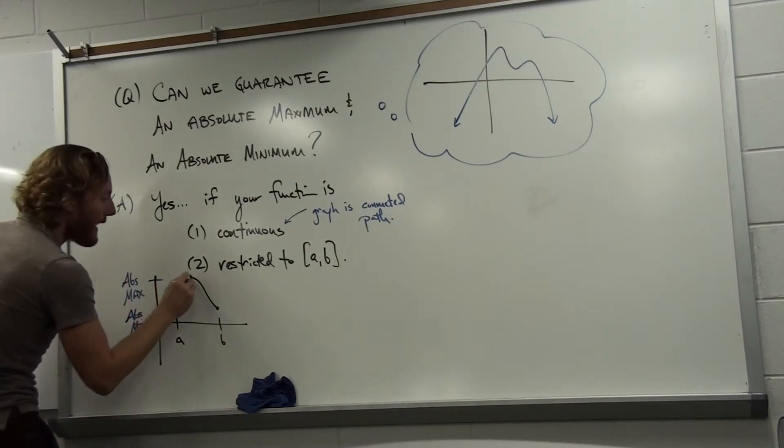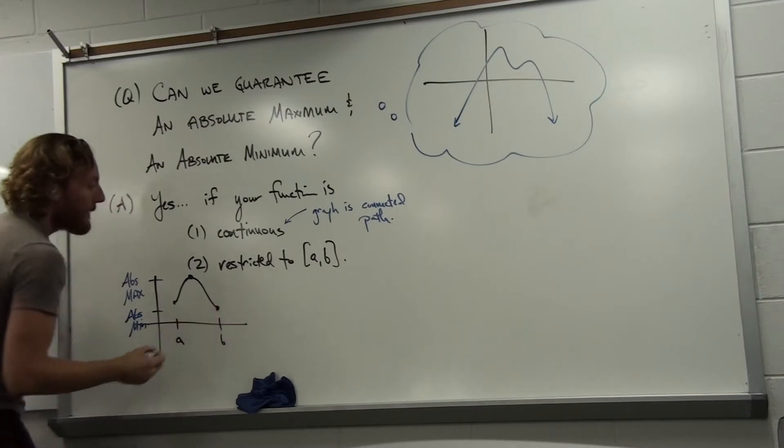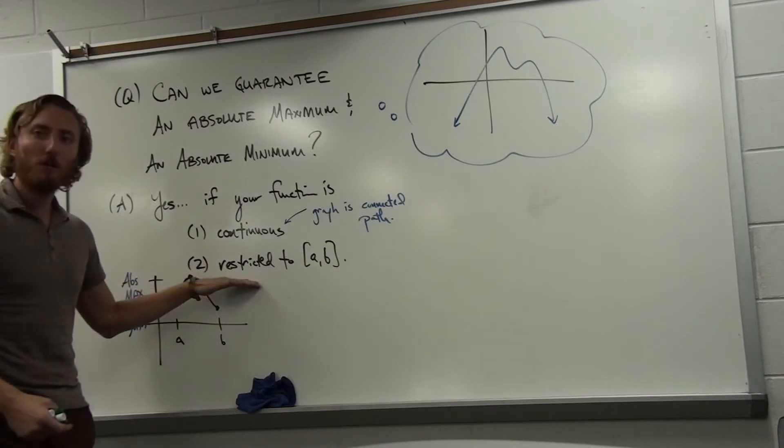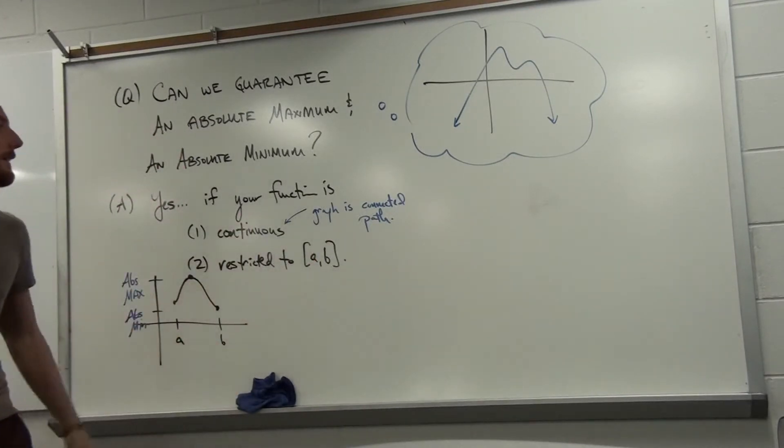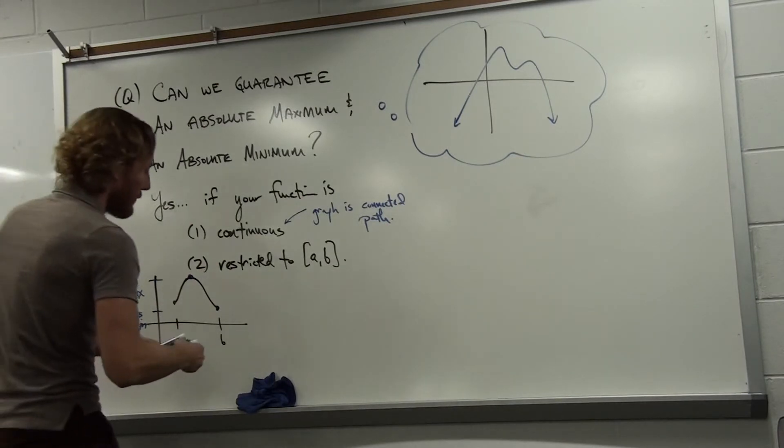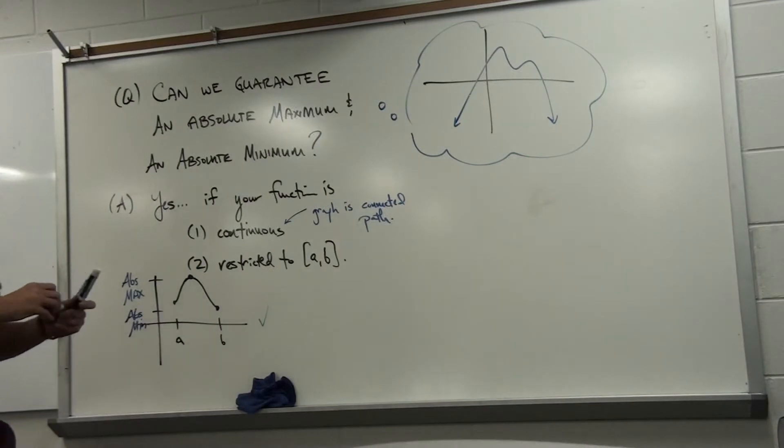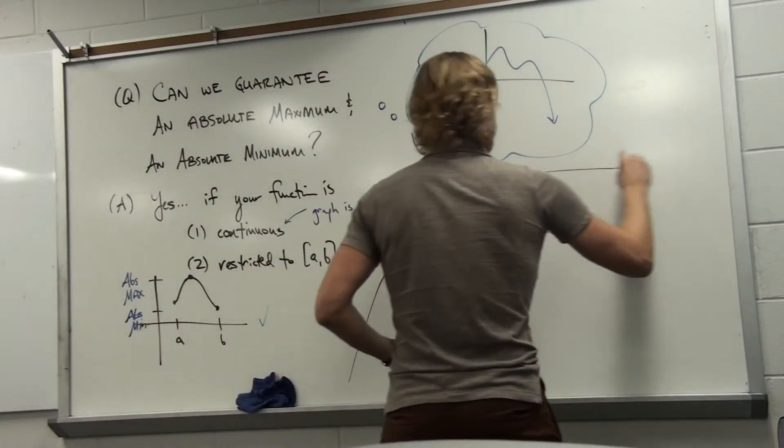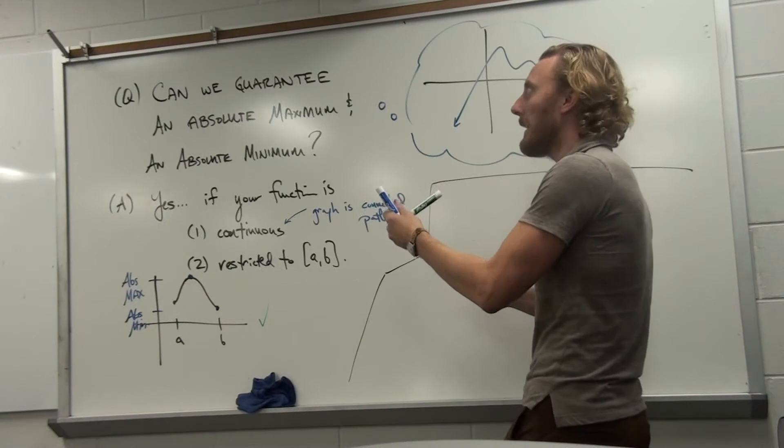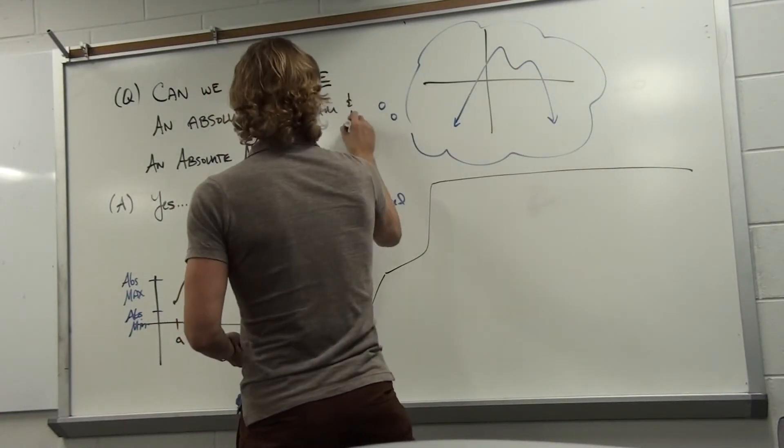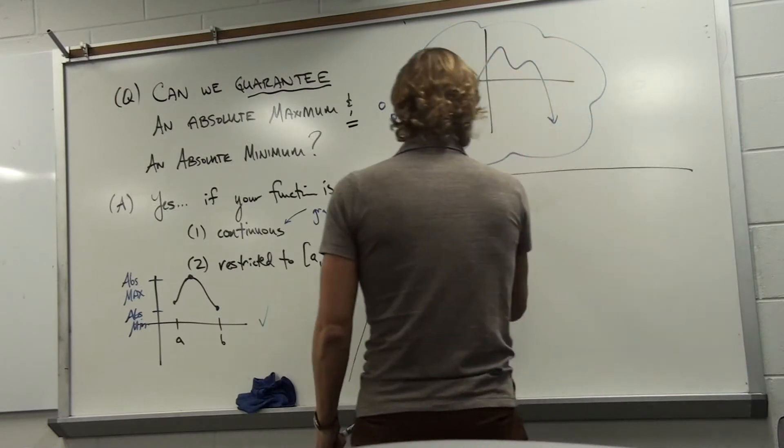As it turned out here, the absolute maximum was at the peak and the absolute minimum was at an endpoint, but so be it. The long story short: because we restricted to this interval including a and b, and because our function was continuous, we have an absolute maximum and minimum. My claim is you need both of these things to guarantee them. Note: both restrictions required.